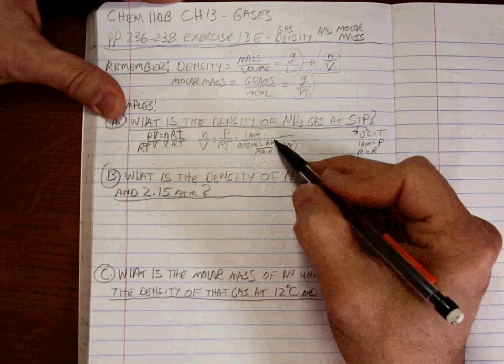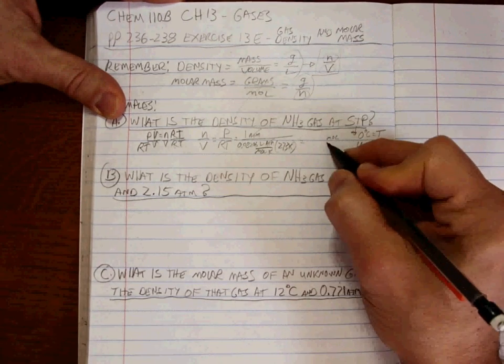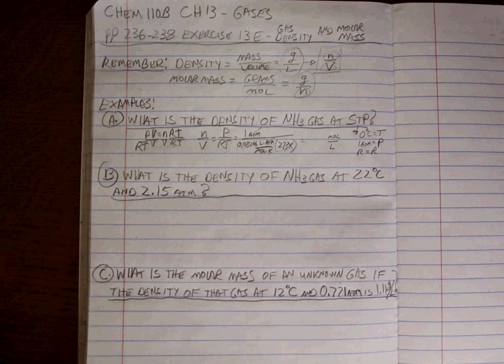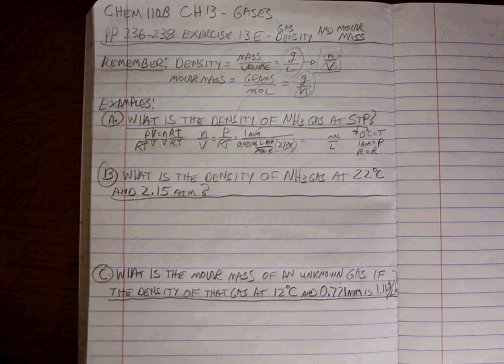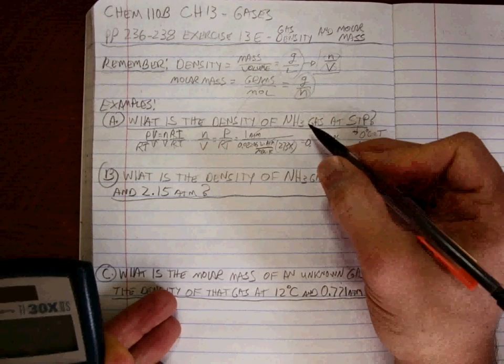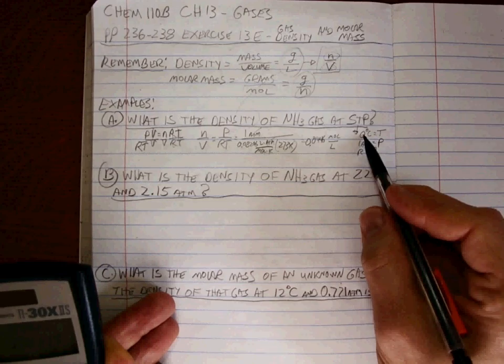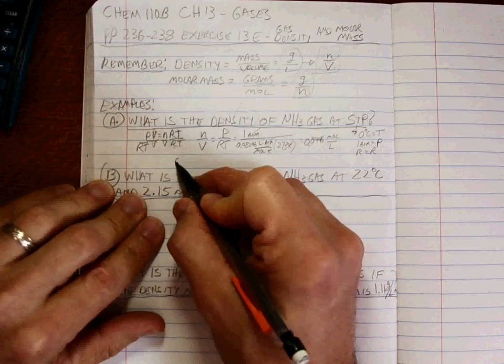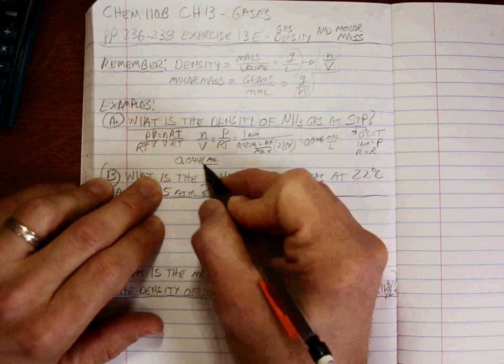Atmospheres cancel. K cancels. One divided by liters divided by moles gives you the moles per liter. What is 1 divided by 0.08206 divided by 273? It's 0.0446. When we add 273, that will be 3 sig figs.